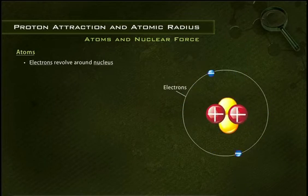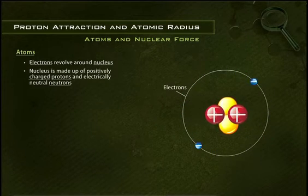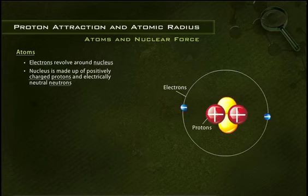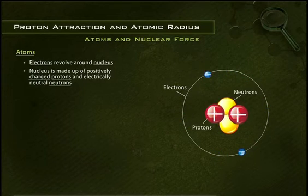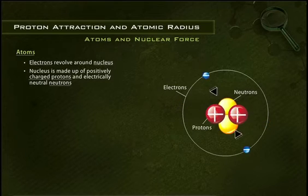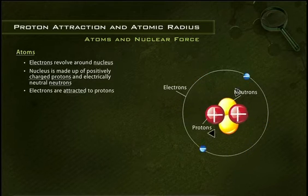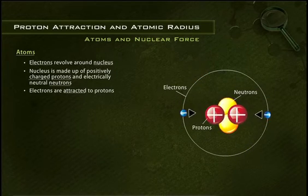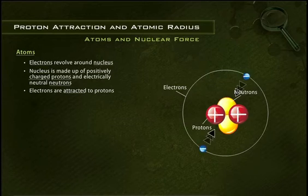In an atom, the electrons revolve around the centrally placed nucleus, which is made up of positively charged protons and electrically neutral neutrons. The negatively charged electrons in an atom are attracted towards the positively charged nucleus like magnets.